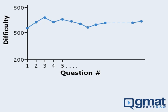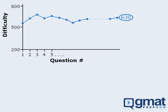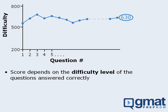If the average difficulty level of the questions you answered correctly fell in the 630 range, then your final score would be 630. This is a very important point, so I'll say it again. Your score depends on the difficulty level of the questions you answered correctly.